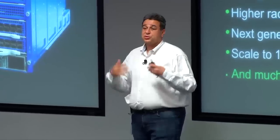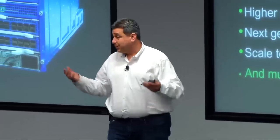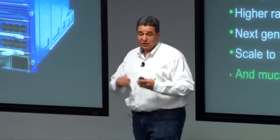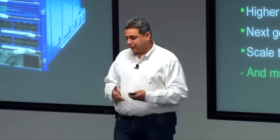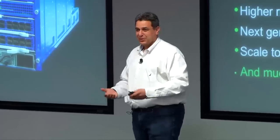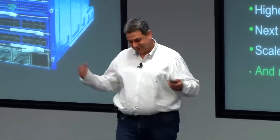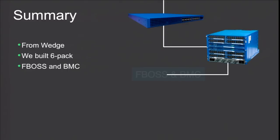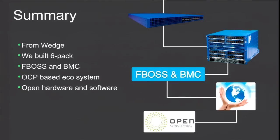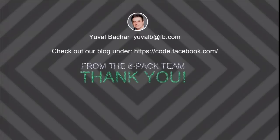Our goal as Facebook is to share our knowledge with the world to enable people to build better data centers — more efficient, more scalable, more reliable for us and for them. This is our altruistic goal. We don't get money off that; we don't sell Six Pack — you can't order Six Pack tomorrow. In summary, we started from Wedge, built Six Pack, put on top of it FBOSS and BMC, built an ecosystem, and we're going to contribute to OCP. That will take us to the next level of switching in the whole industry. Thank you very much.